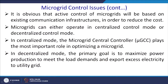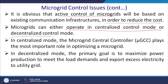Regarding the control issues of microgrids: active control will be based on existing communication interfaces or infrastructures to reduce cost — if you already have SCADA or ZigBee, you will use those. A microgrid can either operate in centralized control mode or decentralized control mode. In centralized mode, the microgrid controller plays the most important role in optimizing the microgrid. In decentralized mode, the primary goal is to maximize power production to meet the load demand and export excess electricity to the grid.